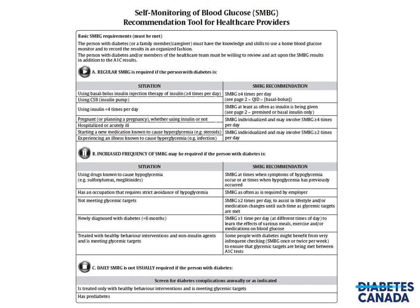In 2011, we developed the self-monitoring of blood glucose recommendation tool for healthcare providers. This is a paper-based tool still available as one of the appendixes in the clinical practice guidelines document, utilizing a stoplight system. Green indicates when regular SMBG should be performed and is required. Yellow indicates when increased frequency of self-monitoring of blood glucose might be required. Red indicates when daily self-monitoring of blood glucose is not usually required. Each table shows the situation and subsequent self-monitoring recommendations to achieve glycemic targets or ensure safety, such as prevention of hypoglycemia. Of note, regular SMBG is not recommended in people achieving their glycemic targets on behavioral interventions alone or in those who have prediabetes.